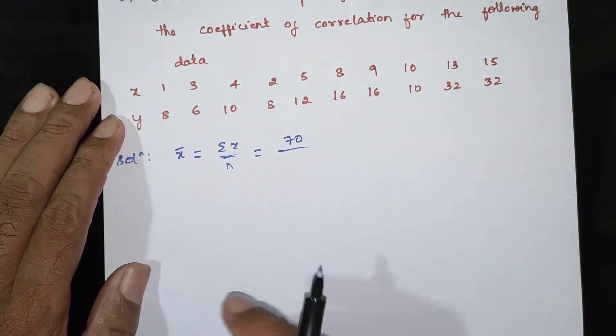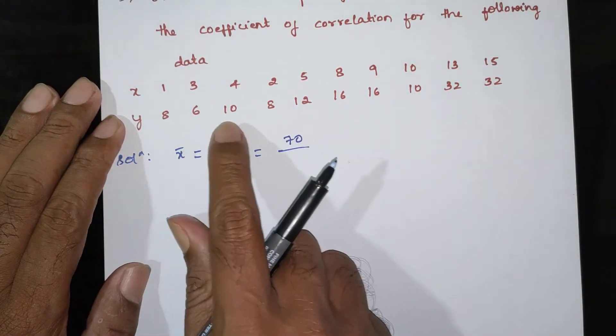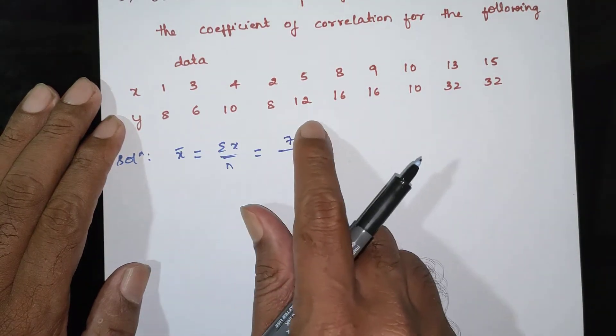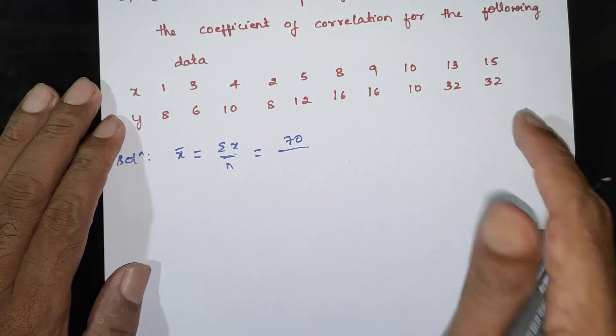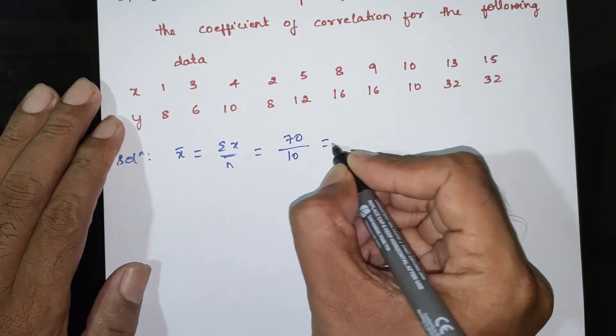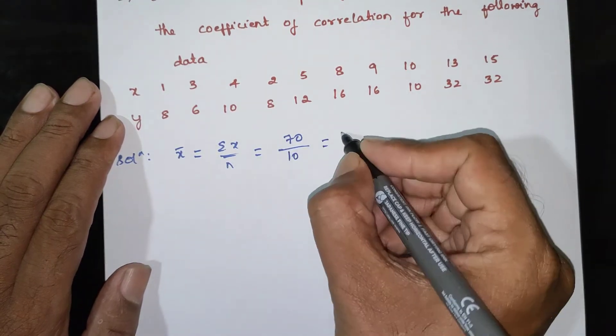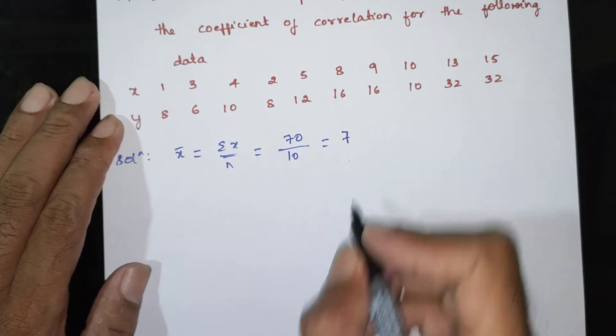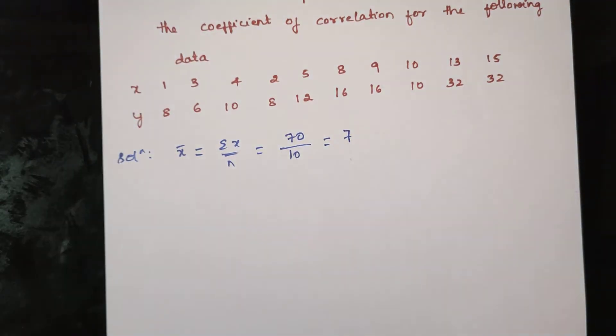Now count n: 1, 2, 3, 4, 5, 6, 7, 8, 9, 10. So n = 10. Therefore x̄ = 70 / 10 = 7.